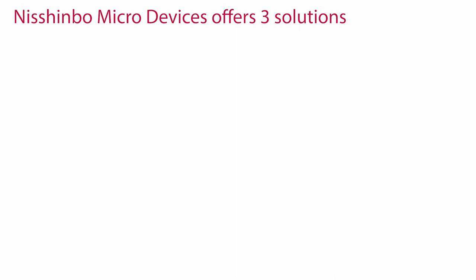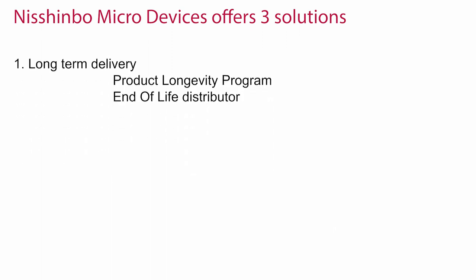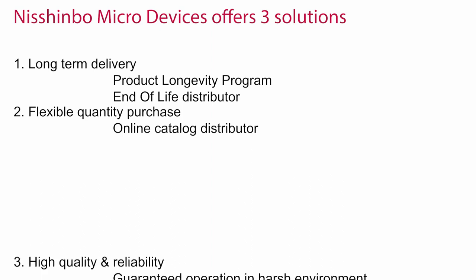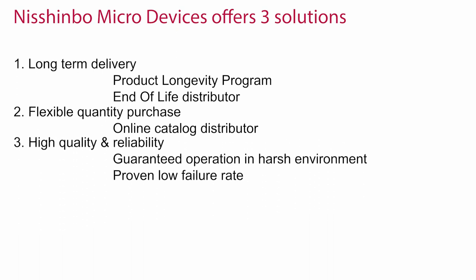Nishimbo offers three solutions for these issues. First, long-term delivery of products specified in our product longevity program and cooperation with a distributor for end-of-life components. Second, flexible quantity purchase by ordering our products from online catalog distributors. Third, high quality and reliability of products by a guaranteed operation in harsh environments and proven low failure rate.